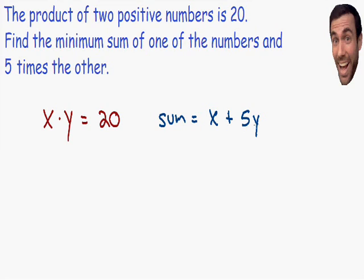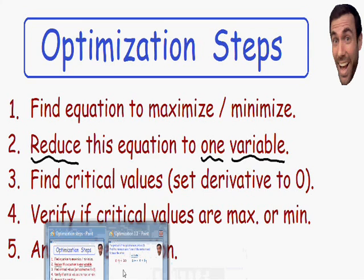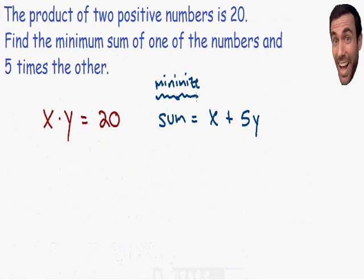Step number one says to find the equation to maximize or minimize, and this information is always given to us. It says find the minimum sum, so this sum equation is what we have to minimize — we're going to find the two values of x and y which give us the smallest, minimum sum. Moving on to step number two: reduce this equation to one variable. Our sum equation has two variables, x and y, so we need to reduce it to one variable.